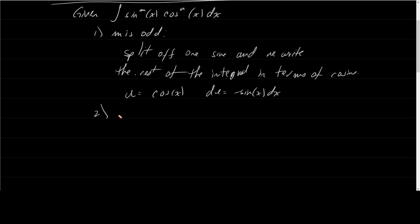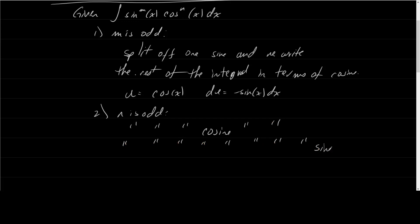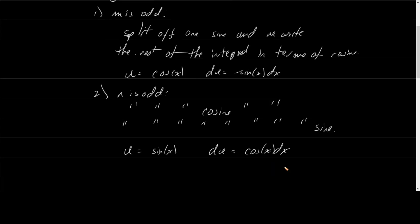The second scenario is where n is odd. If n is odd, it's basically the same but for cosine. We split off one cosine and write the rest of the integral in terms of sine. At that point, u is sine of x and du will be cosine of x dx.